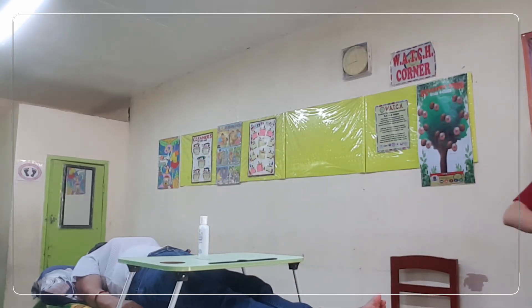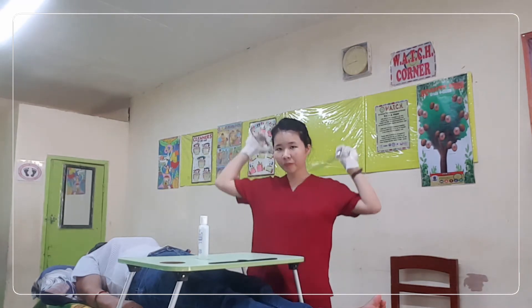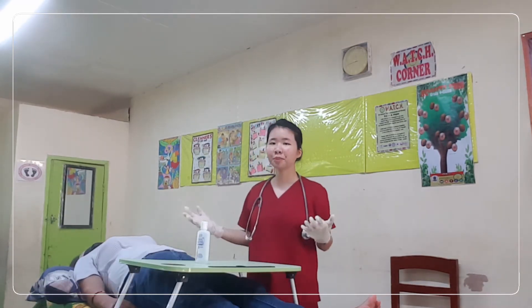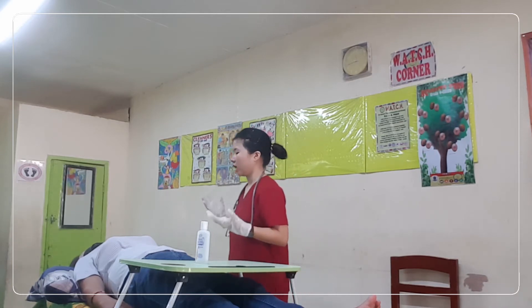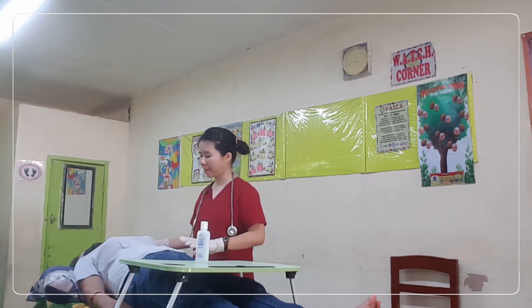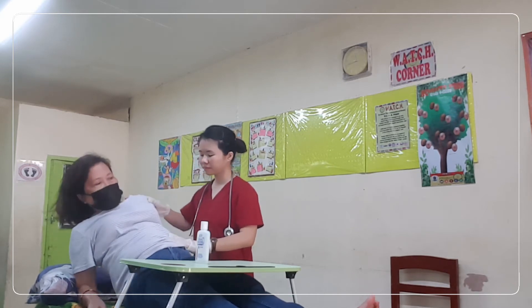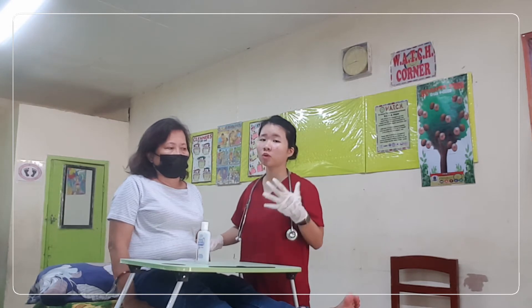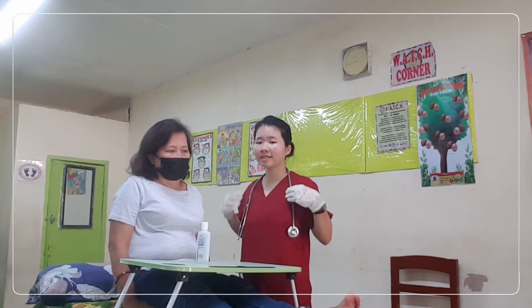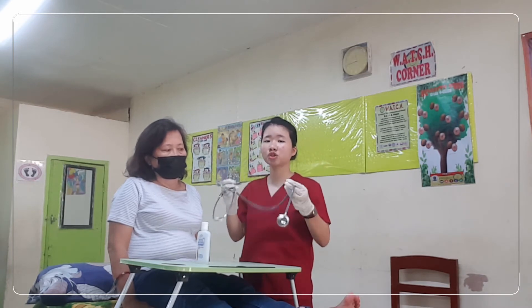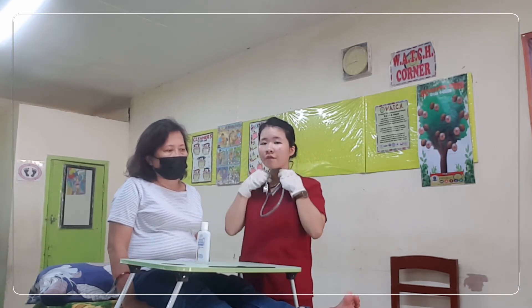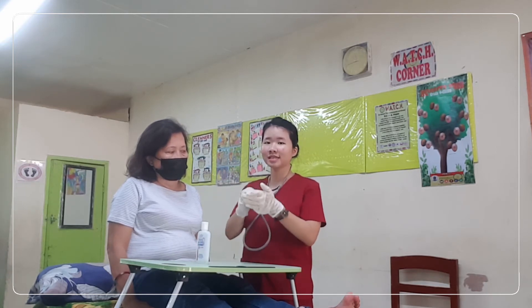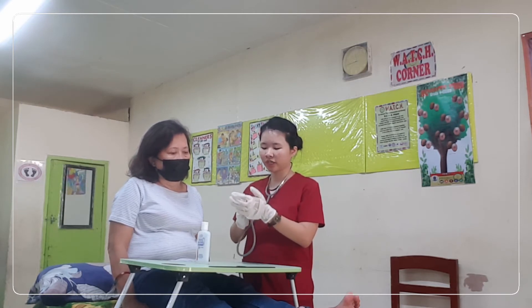For step number seven, assist the patient to a sitting or reclining position and expose the apical area. For procedure number eight, move the patient's clothing to expose only the apical side. Before that, hold the stethoscope diaphragm against the palm of your hand for a few seconds so that it can be comfortable for the patient when it touches the skin.